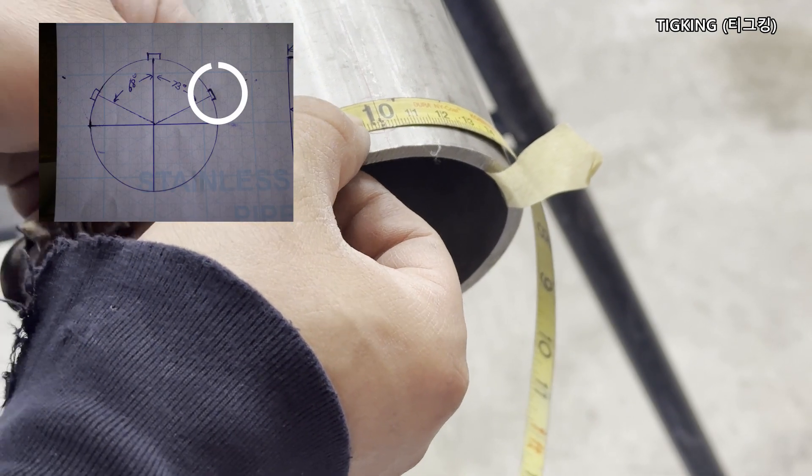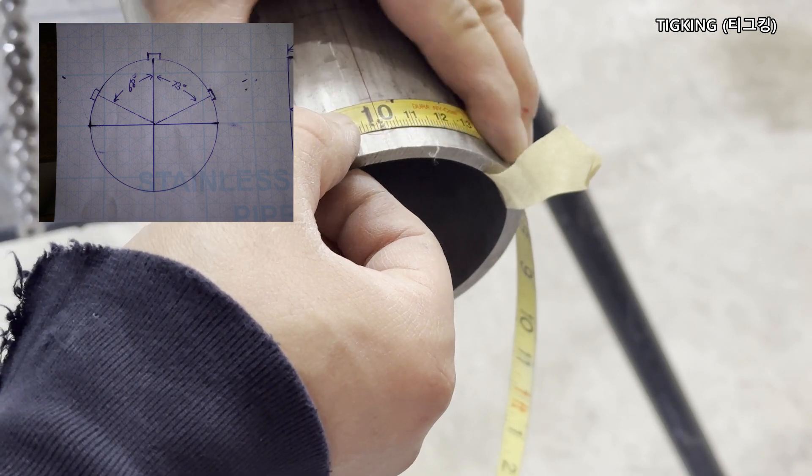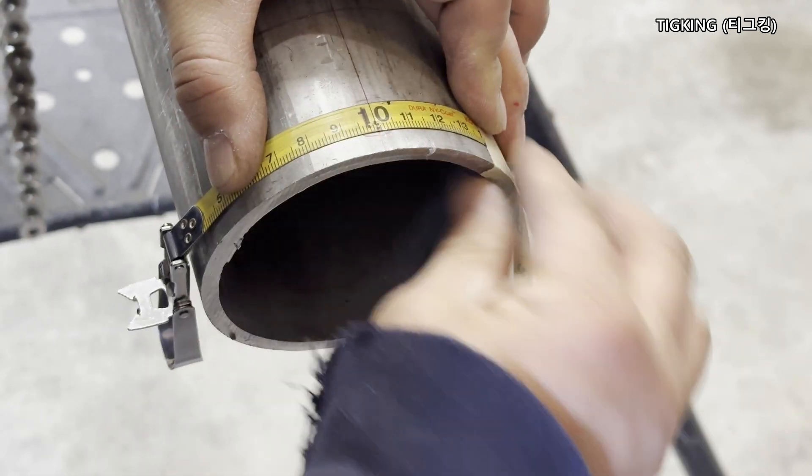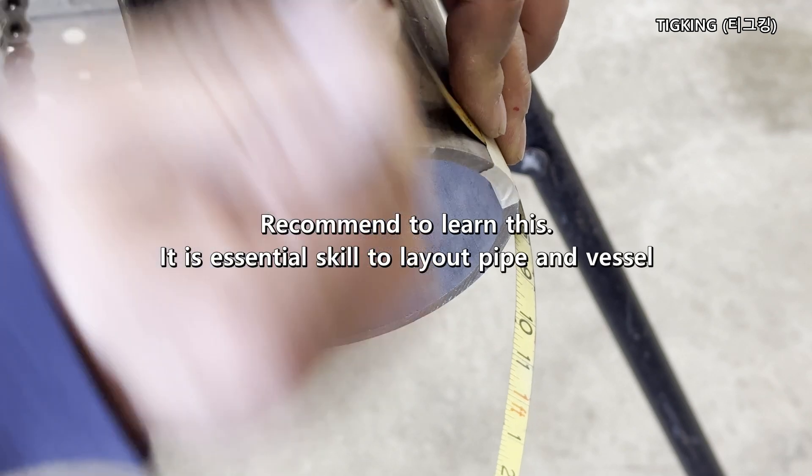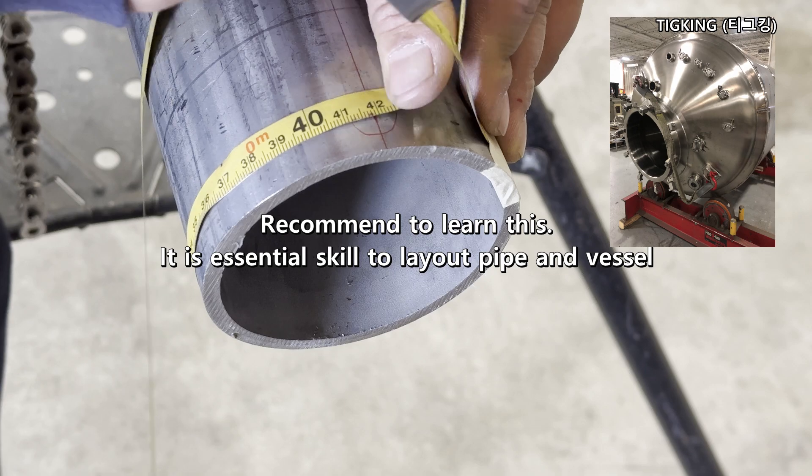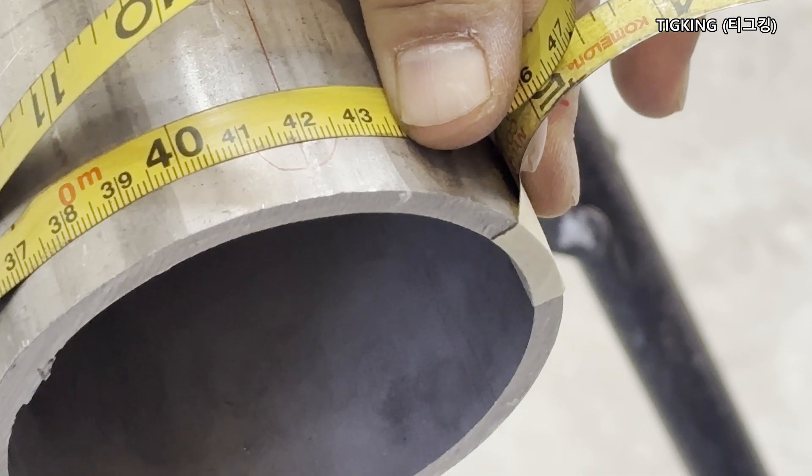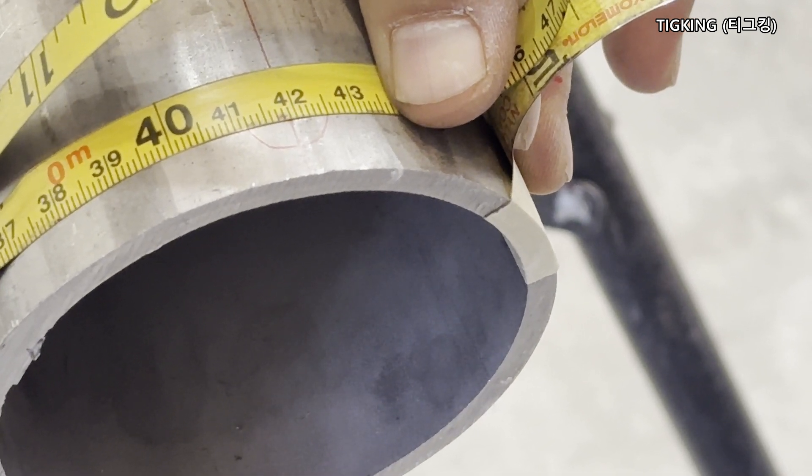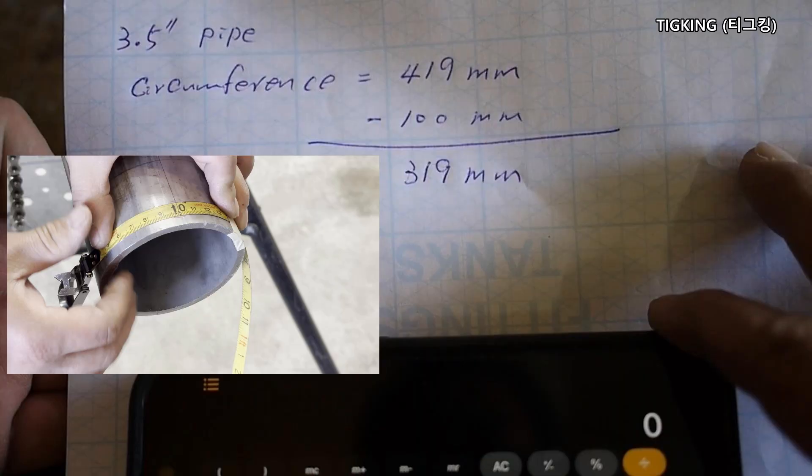Next, I will show you how to find the 73 degree location. Using a circumference tape measure, I find the pipe circumference. I start from 100 mm and wrap it around the pipe. The circumference is 419 mm. But you have to minus 100 mm because I started from 100 mm. The real circumference is 319 mm.